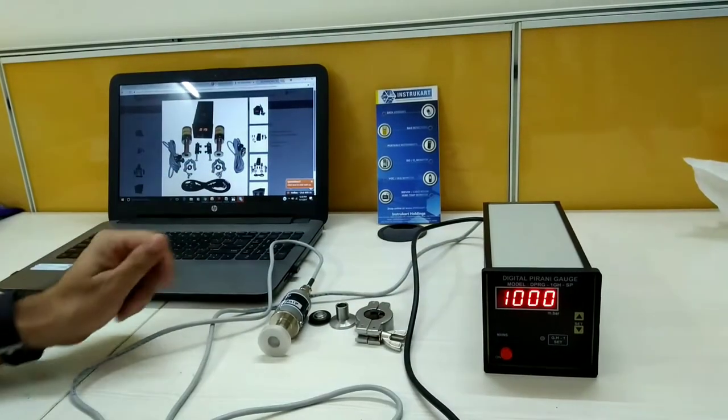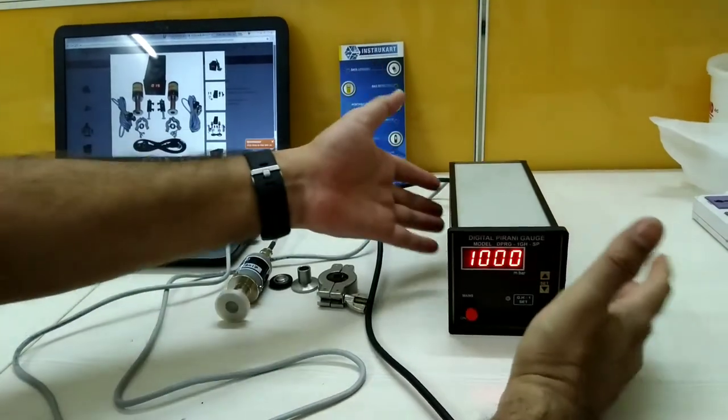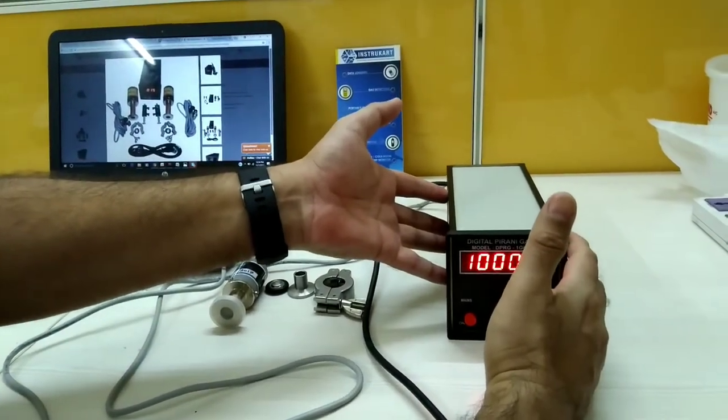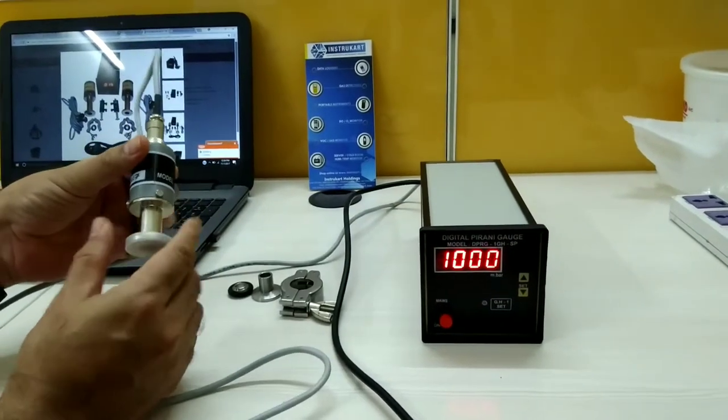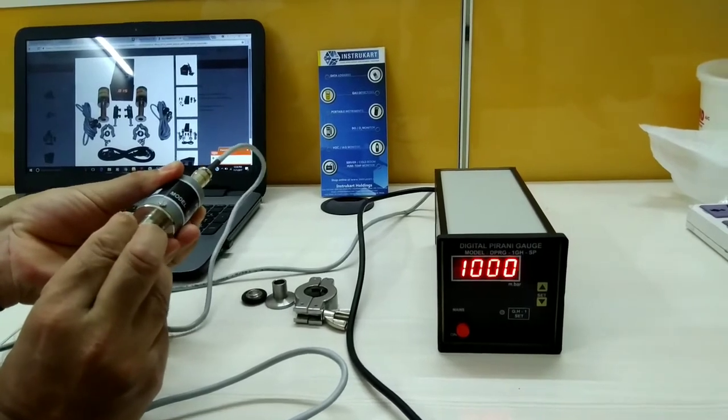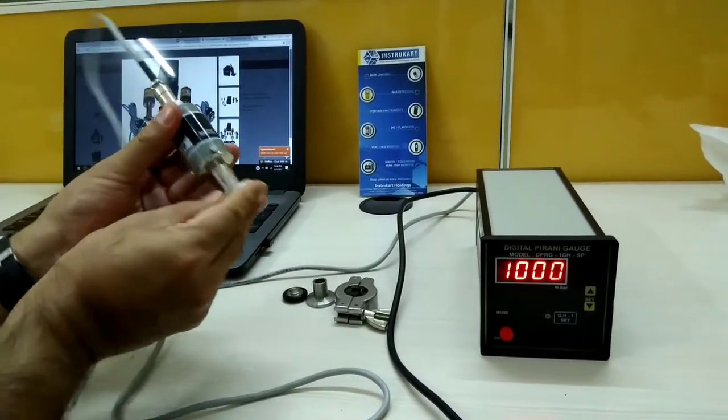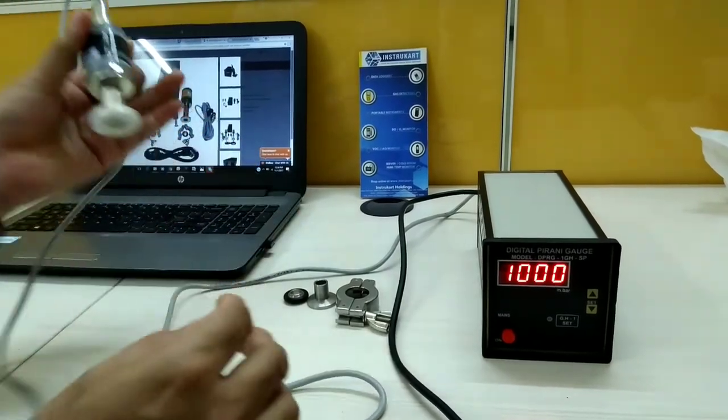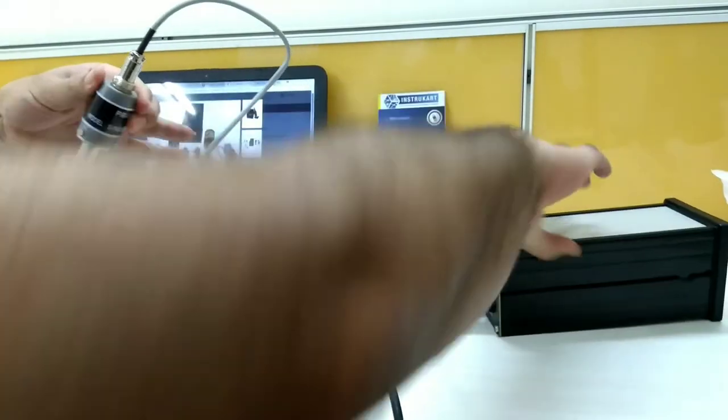The basic set consists of one display unit which we call the Digital Pirani Gauge. It comes with a Pirani Gauge Head. This is a typical Pirani Gauge sensor but in technical parlance it's called a Pirani Gauge Head. The accessories include a cable which connects the Pirani Gauge Head to the Pirani Gauge.